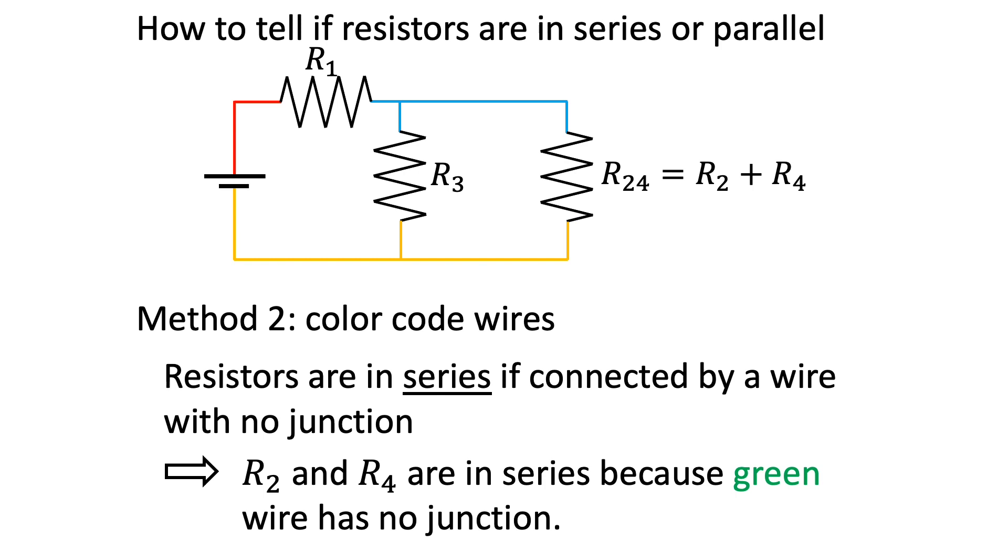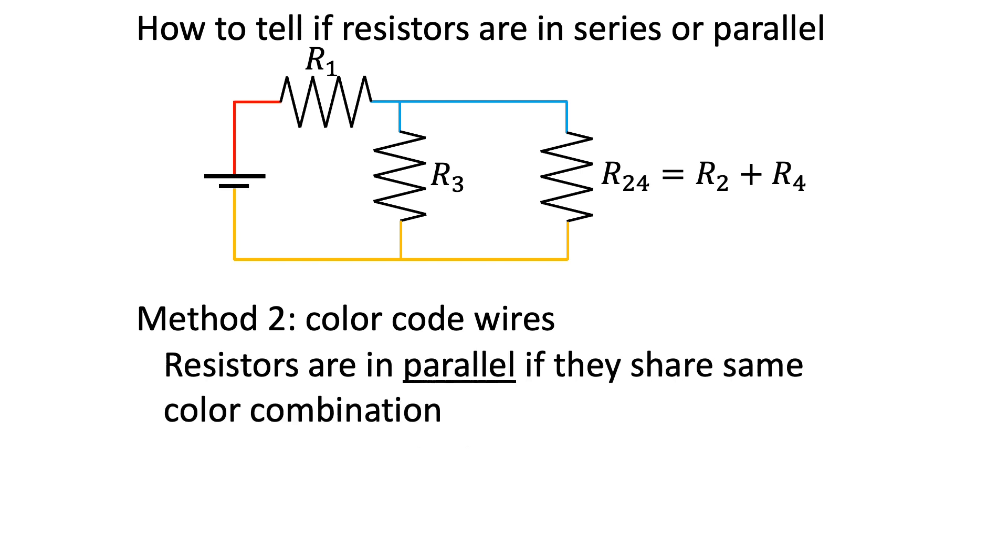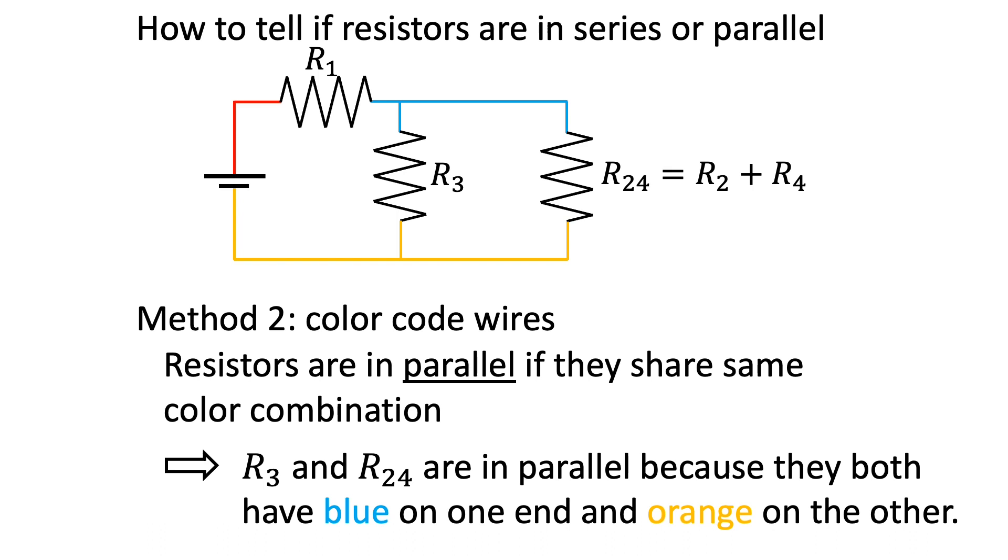The actual advantage of using color coding method is for identifying resistors in parallel. Resistors are in parallel if they share the same color combination. In this case, R3 and R24 are in parallel because they both have blue on one end and orange on the other.